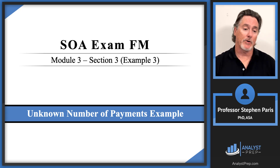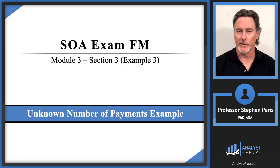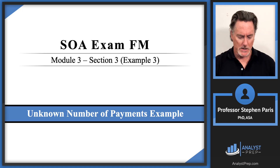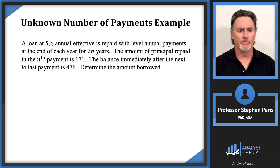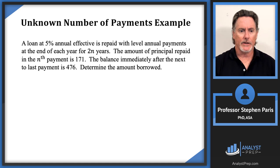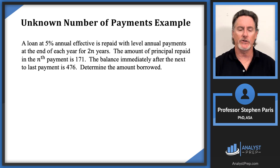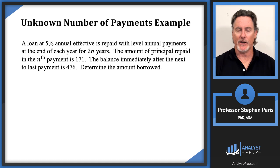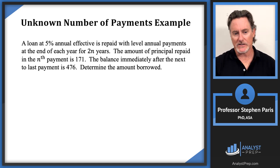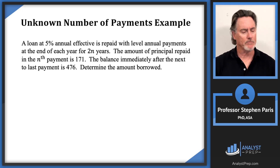In this video we're going to do an example where we are paying off a loan but we don't know how many payments we have to make. We have a 5% annual effective interest rate on a loan being repaid with level annual payments at the end of each year for 2n years. The amount of principal repaid in the nth payment is 171, and the balance immediately after the next-to-last payment is 476. We're asked to calculate the amount borrowed.